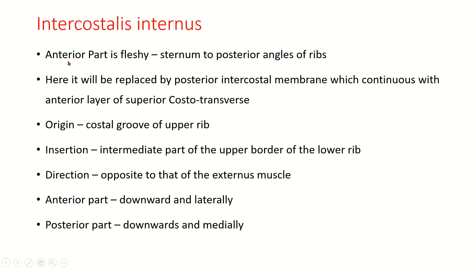Intercostalis internus: its anterior part is fleshy, unlike the externus where the anterior intercartilaginous part was membranous. It extends from the sternum to the posterior angle of the ribs, where it is replaced by the posterior intercostal membrane, which continues with the anterior layer of the superior costotransverse ligament. Origin is from the costal groove of the upper rib; insertion is to the intermediate part of the upper border of the lower rib. Its direction is opposite to that of the externus — anteriorly it is downward and laterally, posteriorly it is downwards and medially.